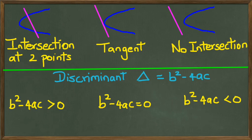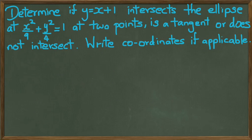Alright, so let's have a look at an example. Determine if y equals x plus 1 intersects the ellipse at x squared over 9 plus y squared over 4 equals 1 at two points. Or is it a tangent? Or does it not intersect at all? And I've been asked to give coordinates if applicable.